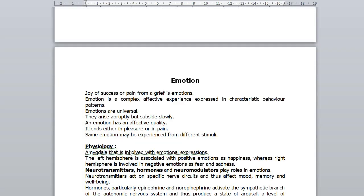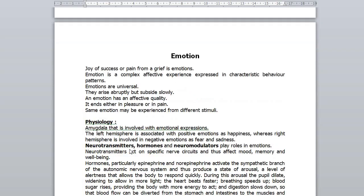Now, the physiology of emotion. Recently, researchers have focused on a small structure in the limbic system named the amygdala, which is involved with emotional expressions. It responds for the initial decision to approach or withdraw from a person or situation. The amygdala quickly assesses a danger or threat, which is good for the safety of the individual. The two cerebral hemispheres play a great role in emotion.